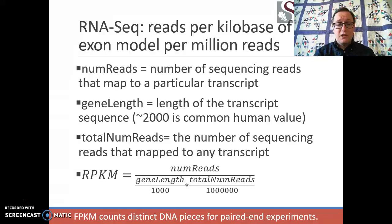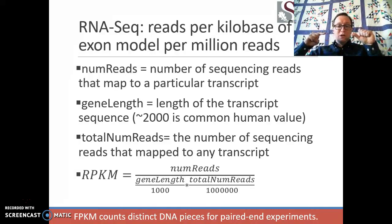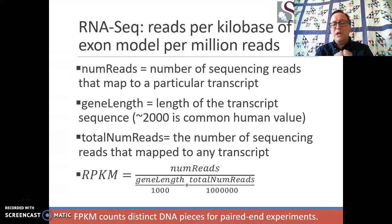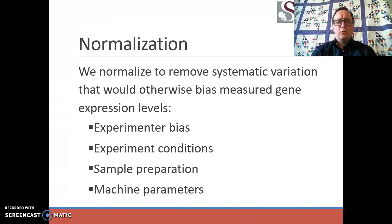Sometimes you'll see the abbreviation FPKM, which is very closely related to RPKM. It reflects the fact that in paired-end reads, we have a piece of DNA with a read from each end of the sequence. If you get both reads, you end up with two reads for this gene even though they come from one piece of DNA. So frequently in paired-end experiments, FPKM measurements are used instead of RPKM.